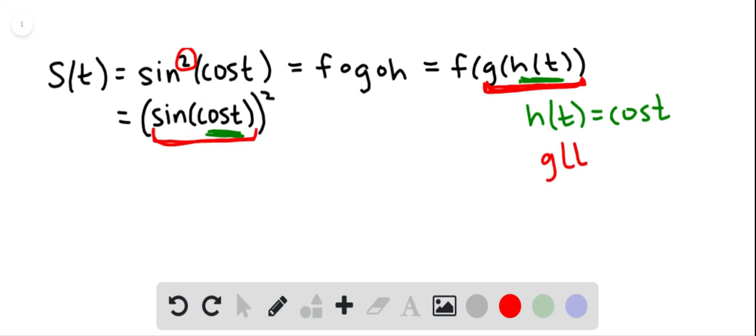So if we let g of t equal the sine of t, then notice that if you were to put h inside g, you would have cosine inside sine and you would have sine of cosine t. That's what we want.